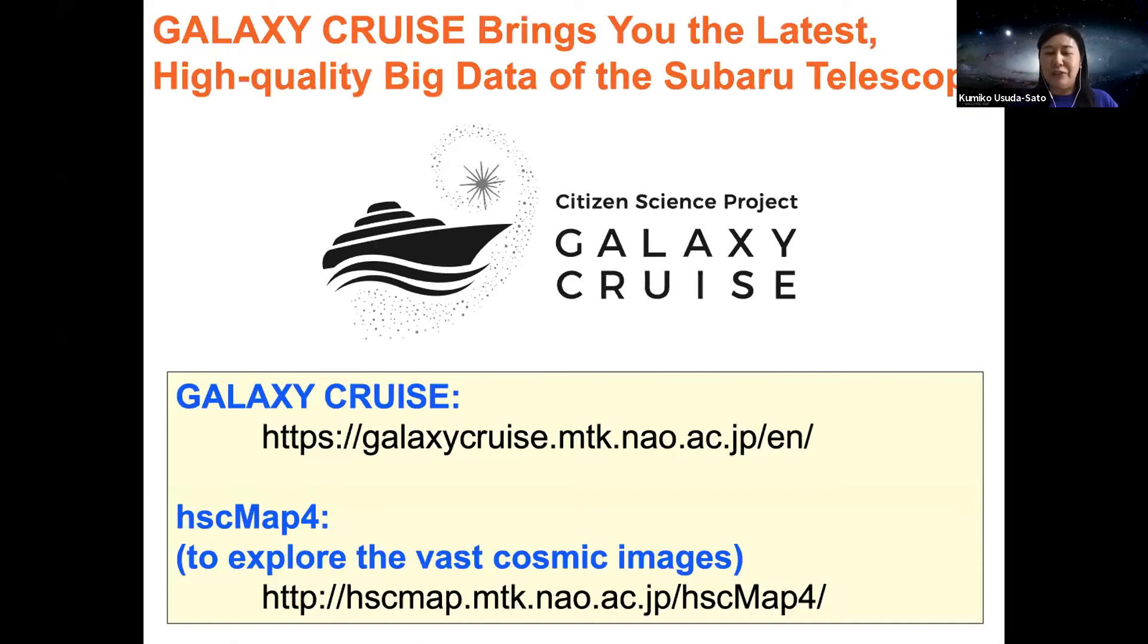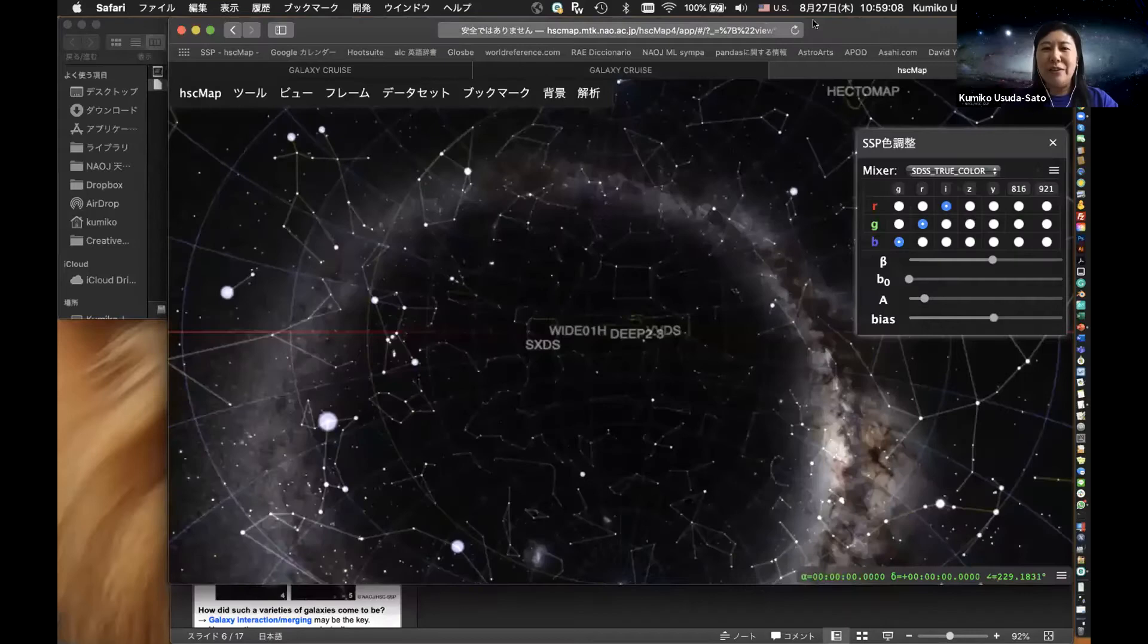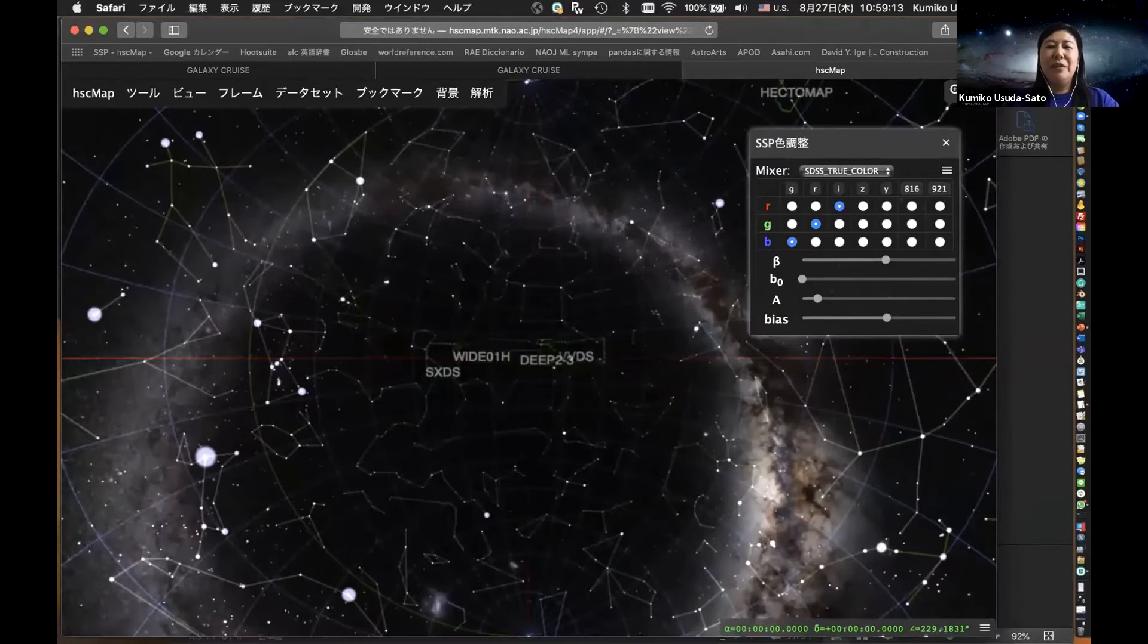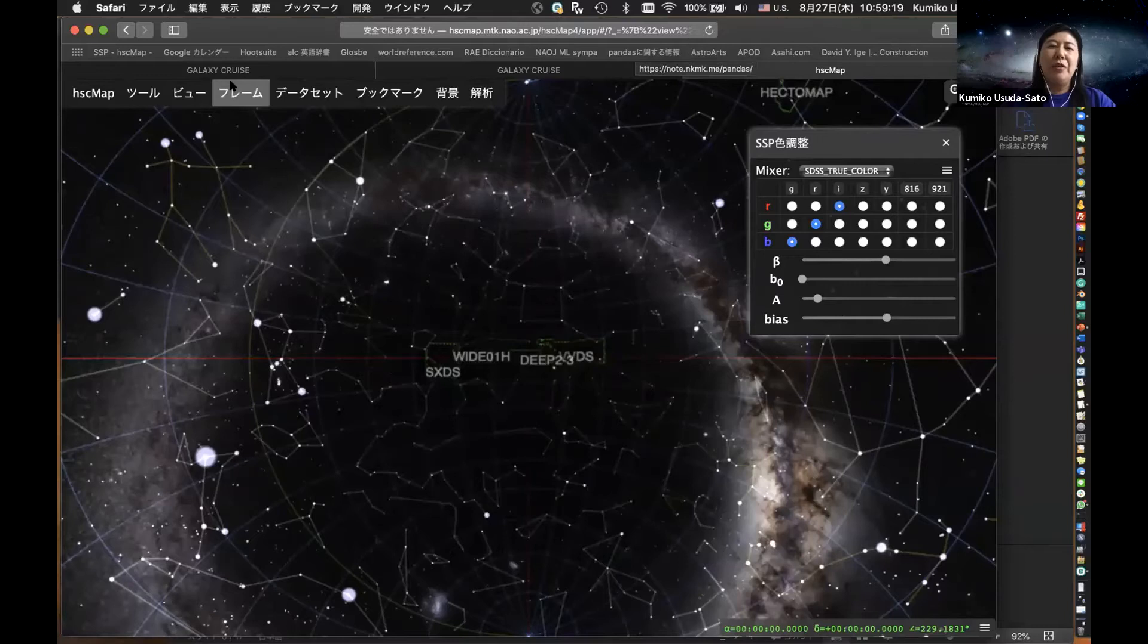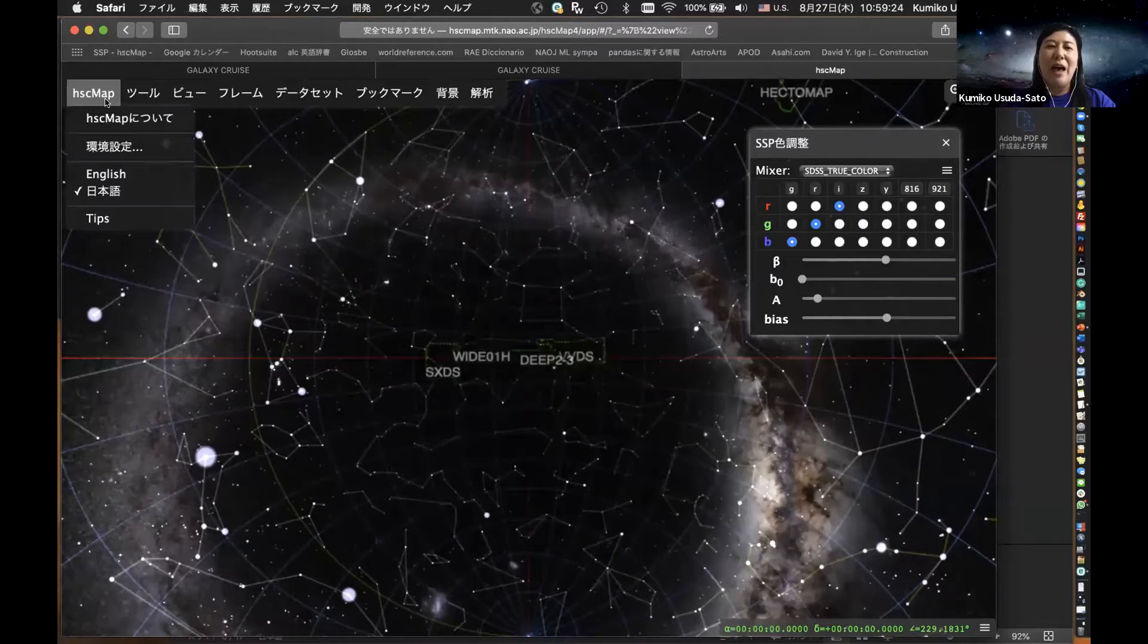I already shared two URLs. The first one is Galaxy Cruise itself, and another one is HSC Map, a kind of Google Map universe version or Subaru version. You can explore the vast cosmic images taken by the Subaru telescope. I will show you the website. Can you see the screen of the HSC Map?